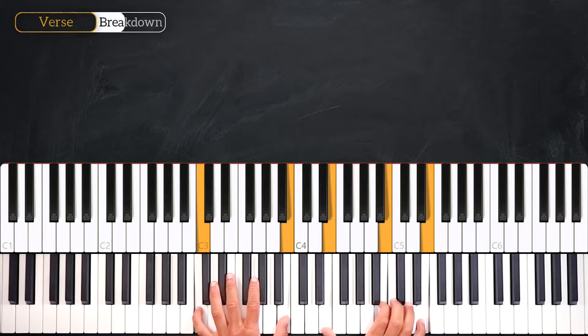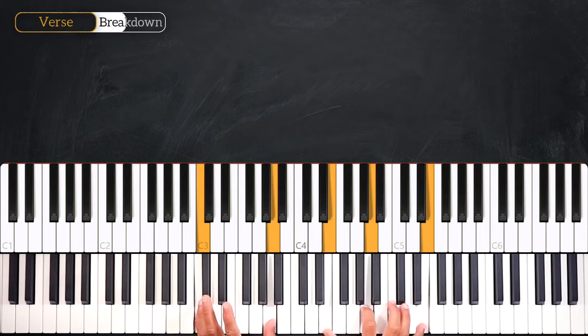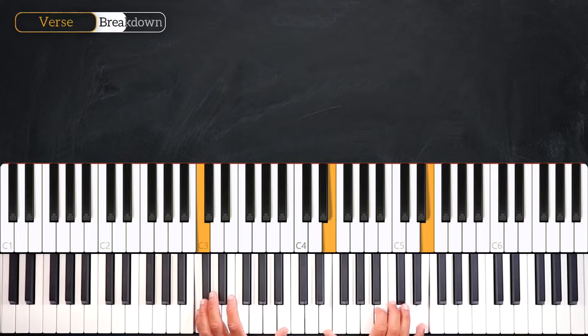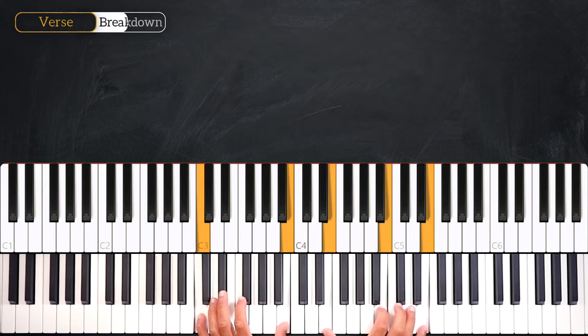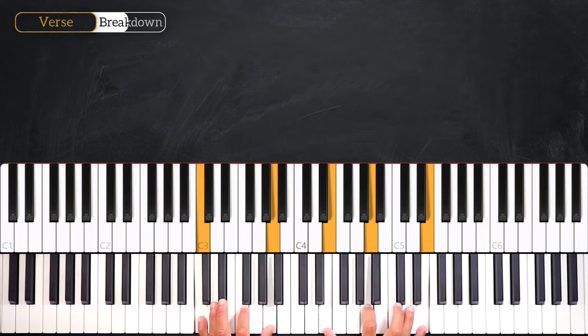So from here we'll play C major 7. So 1, 2, 3, 4. On the 3rd beat we'll play A with our 2nd finger and our thumb on the left hand. 1, 2, 3, 4.